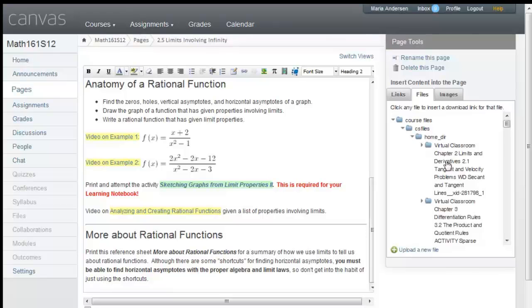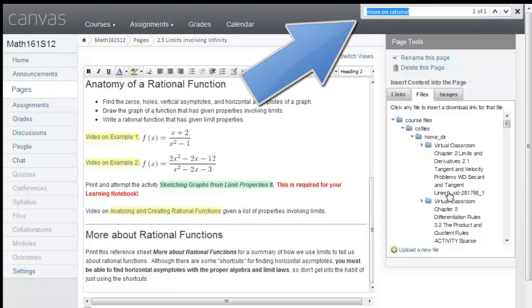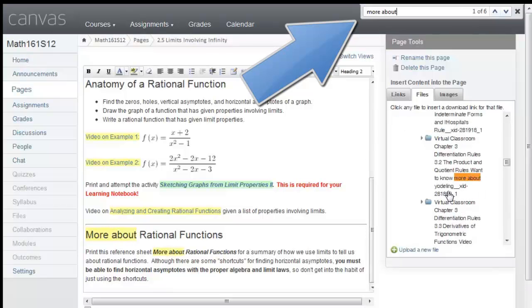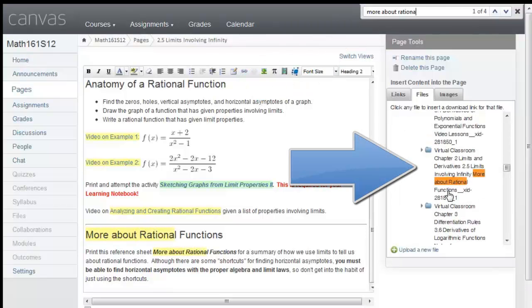While I've got this window open and I'm all the way down in my home directory, I'm going to use a control F or command F to look for the words More About Rational, and you can see that I've found a chapter that's got More About Rational Functions in it.